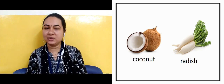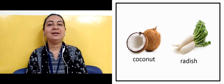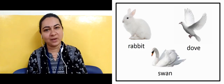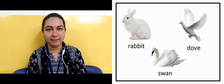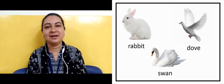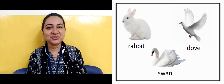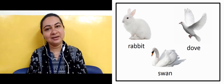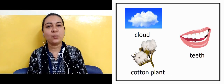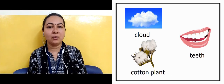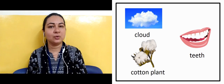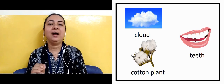The next slide shows us a rabbit, it is white in color. Another one is a dove — dove is a bird, it looks like a pigeon — and it is white in color. Another one is swan, it is white in color. The next slide shows us a cloud, cloud color it is white in color. Another one is a cotton plant — cotton plant is white in color. Another one is teeth, white in color.